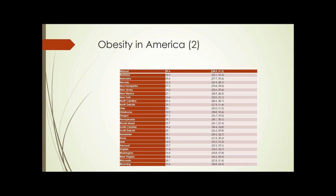Here is the second part of the chart with the rest of the states. Again, some of the highest incidences of obesity are in states that are more rural. How can urban agriculture help there? We'll actually talk about that.